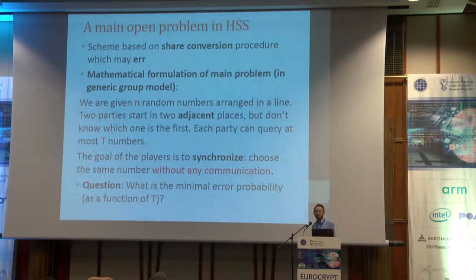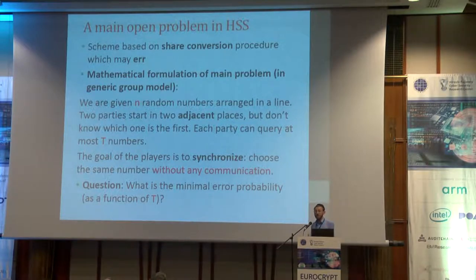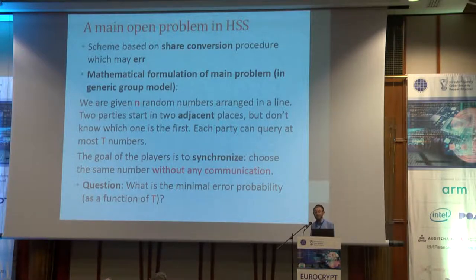The main problem in the paper of BGI is the following. The scheme is based on a shared conversion procedure which has errors, and since it is repeated many times, it is very important to reduce the probability of error. This amounts to a clear mathematical problem: we have N random numbers arranged on a line. We have two parties who start in adjacent places on the line, but they do not know who of them is first and who is second. Each one can query the line at most T places. They want to synchronize — that is, choose the same number — without any communication. The question is: what is the minimum possible error probability?